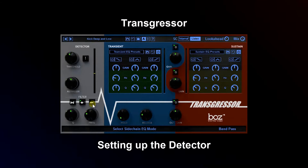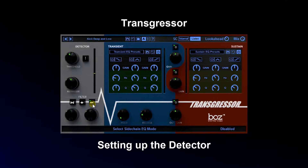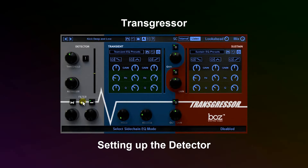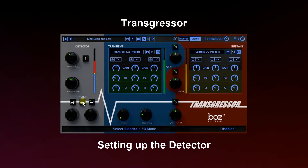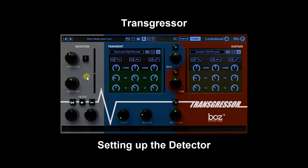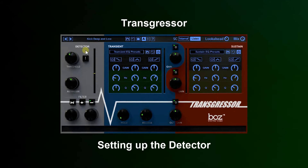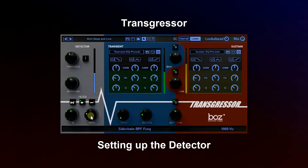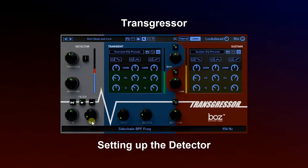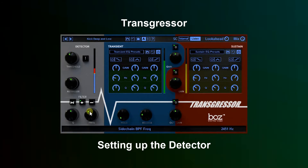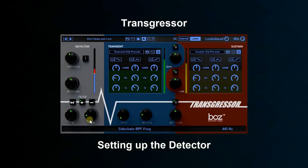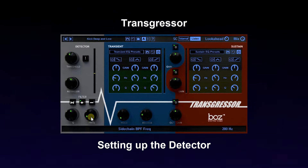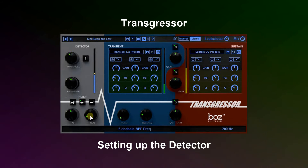You can also bypass this filter altogether by pressing this. So let's listen to what we're working with. We're not listening to the processed signal — we're listening just to the detector. So if we turn on this band pass filter and set up this frequency, we can narrow in exactly where the kick drum is most likely to have transients.